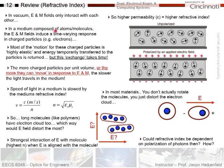In a medium composed of atoms or molecules, the E and M fields introduce a time-varying response in the charged particles, such as the electrons orbiting the atom. And we've said before that the motion for these charged particles is highly elastic. It's not like a metal. We're talking about something that's transparent like glass, and because it's elastic, the energy is temporarily transferred to the particles in return, and this exchange takes time, and this basically slows light down in the material.